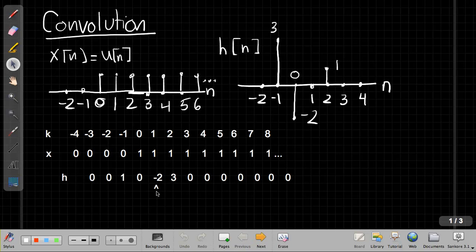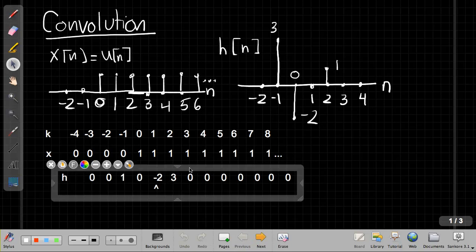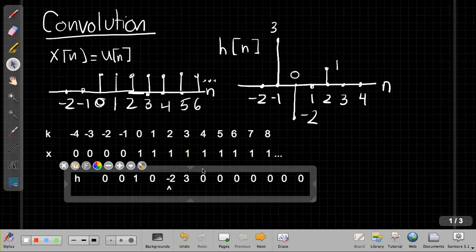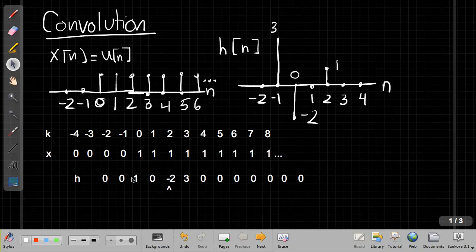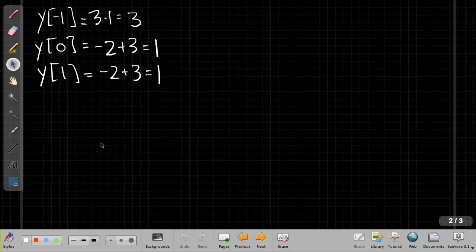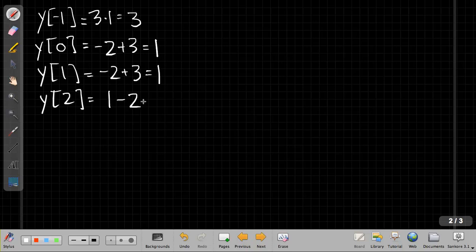And to find the output at n equals 2, I pick up my H signal and slide it over one more. And I get, well, it should be a little better lined up than they are, I get 1 plus 0, minus 2, plus 3. So I get 1, minus 2, plus 3. So I get 1, minus 2, plus 3, which is 2.